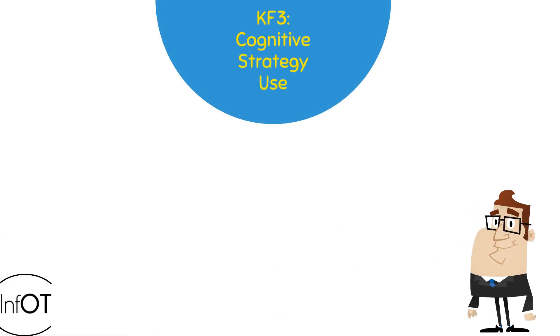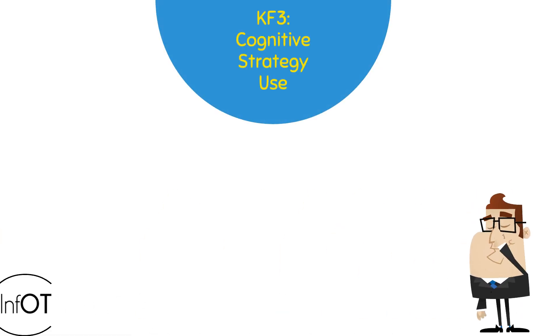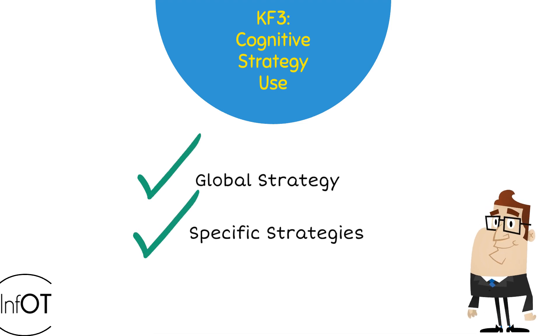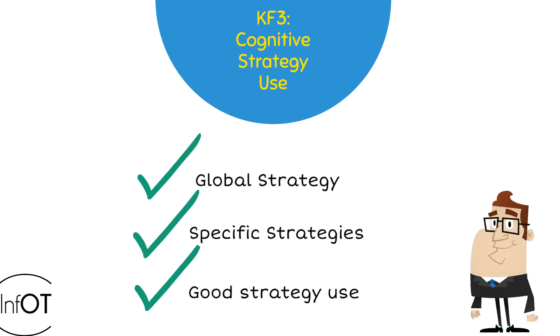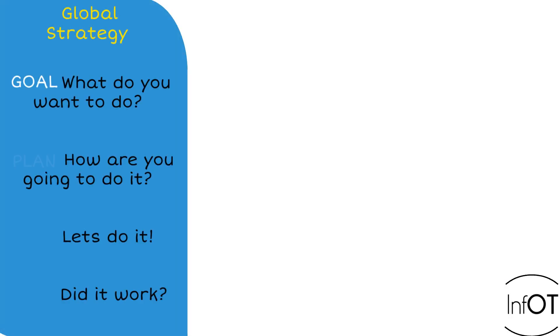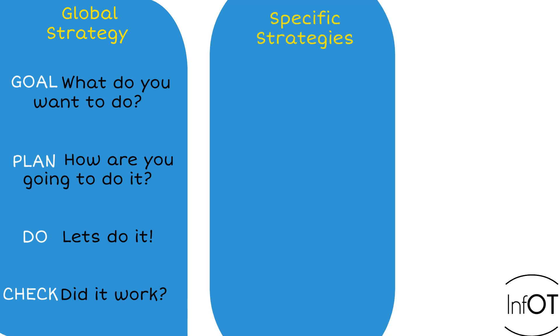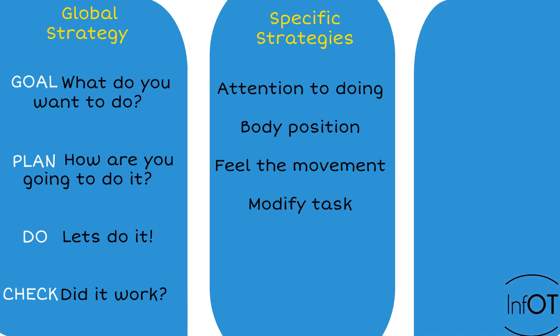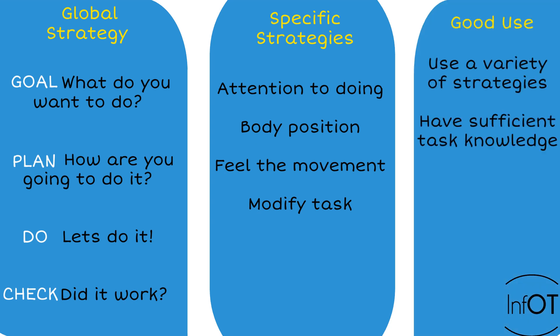Third key feature: Use of Cognitive Strategies. The therapist uses the global strategy along with other specific strategies, ensuring good strategy use. The global strategy is Goal, Plan, Do, Check. Specific strategies may include attention to doing, changing body position, feeling the movement, and modification of the task. Good strategy use is ensured when the therapist applies a variety of strategies and has sufficient task knowledge.